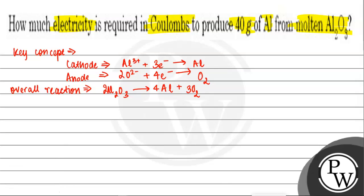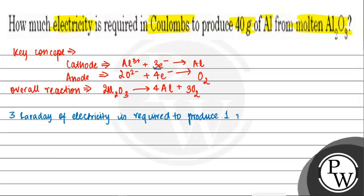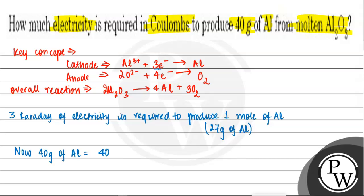Now let's solve this question. We know that 3 electrons are needed, so we can say 3F — 3 Faradays of electricity is required to produce 1 mole of Al. We know that 1 mole of Al is 27 grams, since the atomic mass of Al is 27. So, 40 grams of Al can be produced by 40 divided by 27 moles, which using the unitary method equals 1.48 moles of Al.